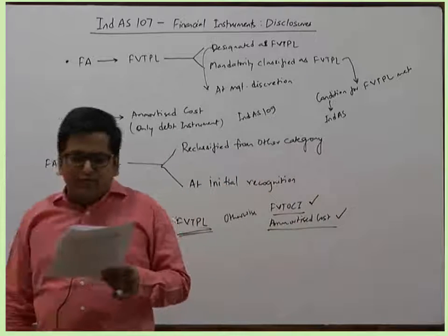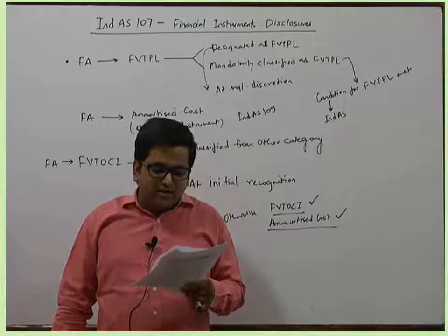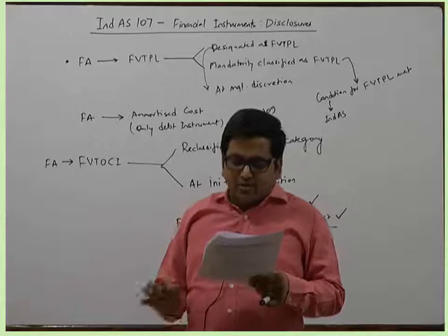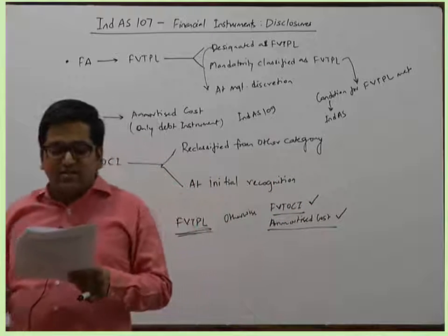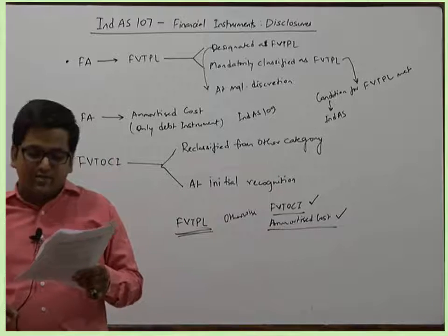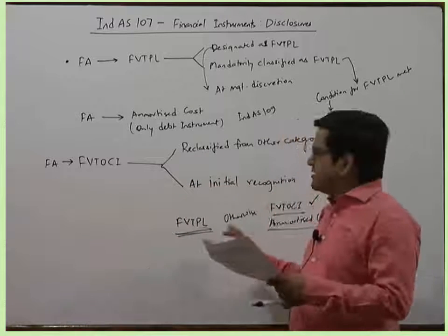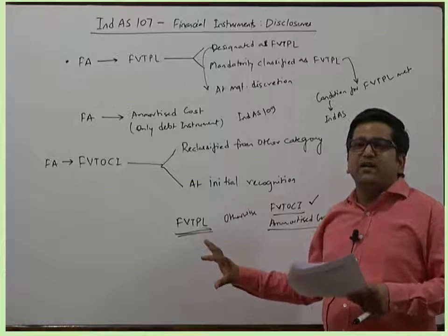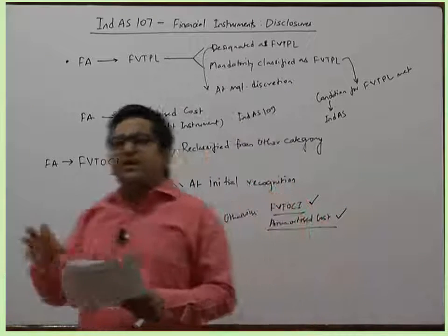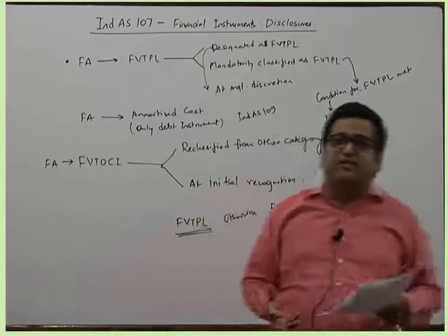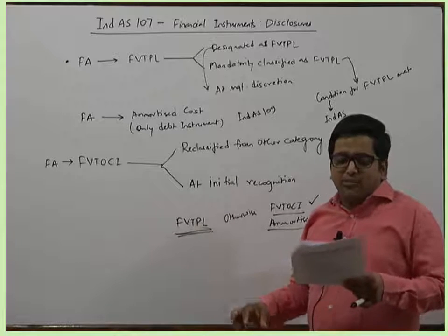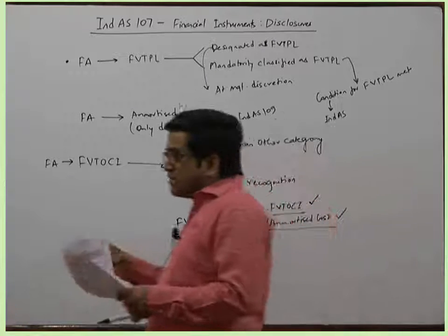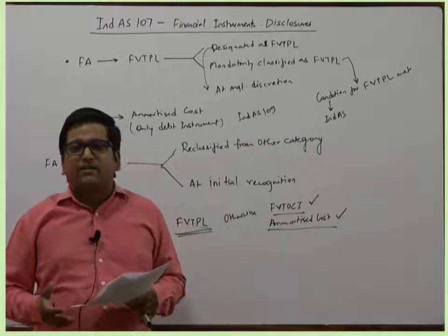Also disclose: the amount of changes in fair value of the loan or receivable attributable to changes in credit risk, and the amount of change in fair value of any related credit derivatives. When credit risk information enters the market, the investment's value may already decline in the secondary market. So for all instruments with credit risk, disclose the impact on fair market value and also the fair market value impact on any related derivatives.